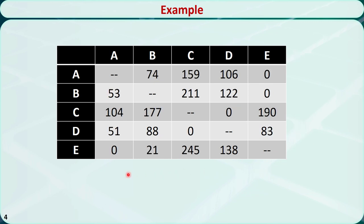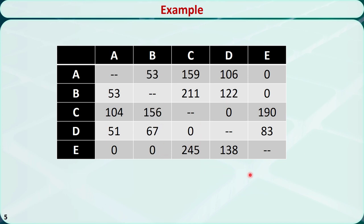Now we find the minimum value for each column. The minimum value in the first column is 0, it is 21 in the second column, and so on. We subtract the minimum value for each column, and this is what we get.